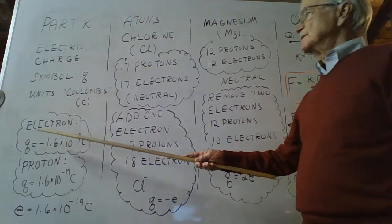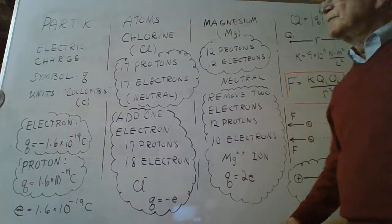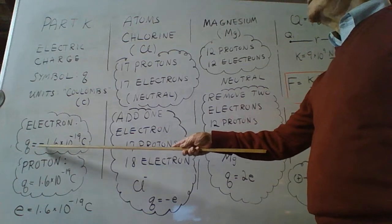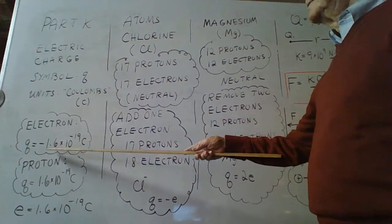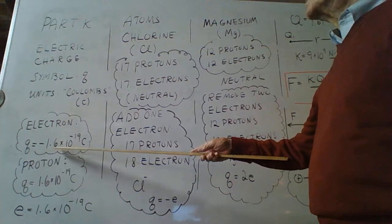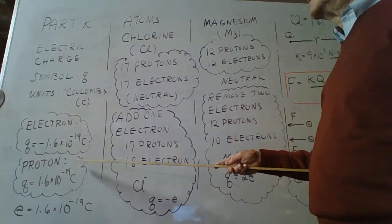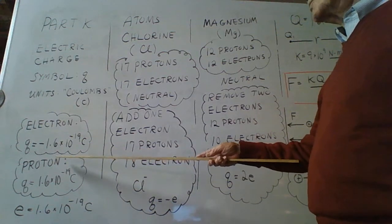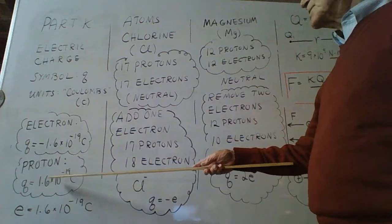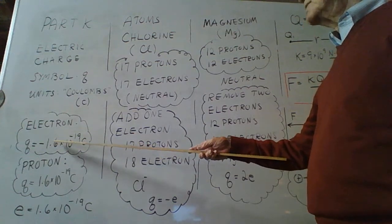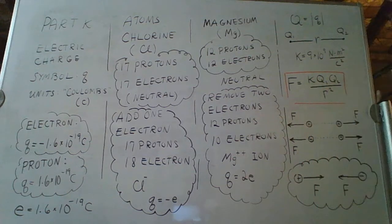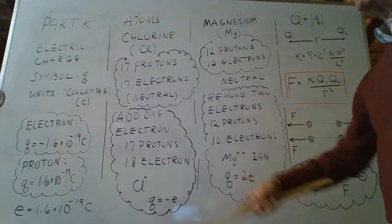The electron is an example of an object that has electric charge. The quantity q of its electric charge is a negative number, shown here, negative 1.6 times 10 to the negative 19 coulombs. The proton likewise has an electric charge. It's the same amount shown here for the electron, except there's not a negative sign in front of the quantity of charge q for a proton. They're both the same numbers, opposite signs.